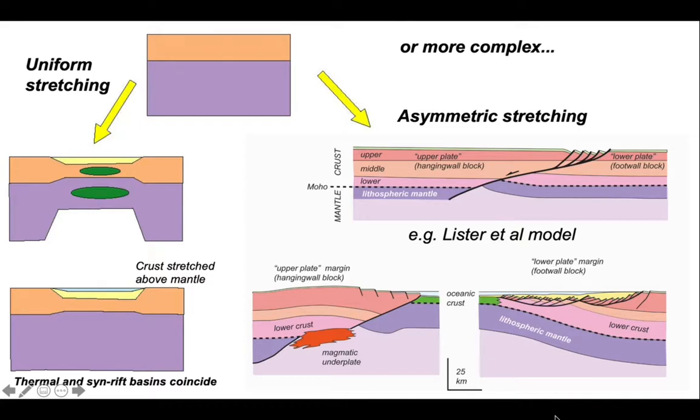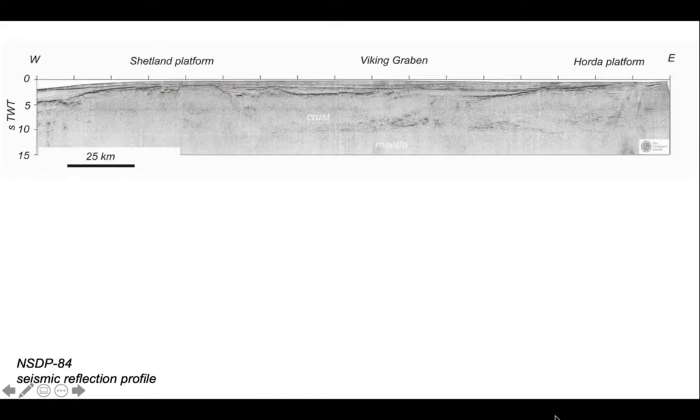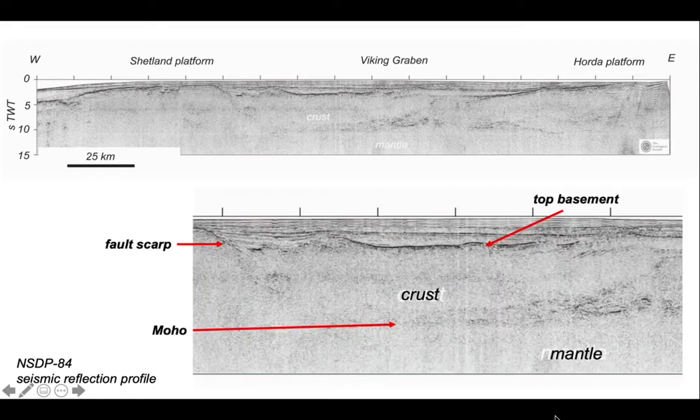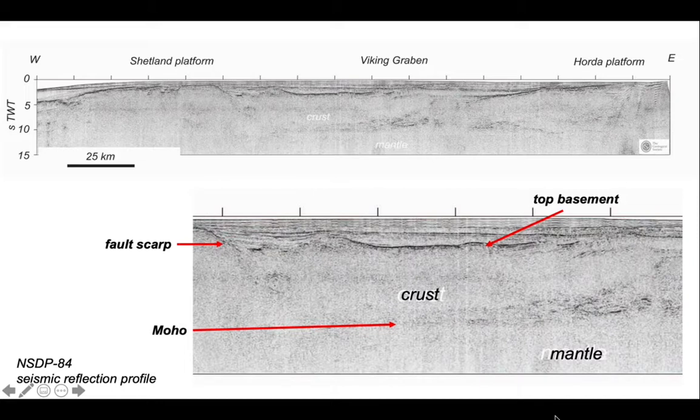So how relevant are these models to sedimentary basins? This was a fundamental question in the early part of the 1980s as seismic reflection profiles began to be developed that imaged the entire crust across basin systems. The North Sea was a key testing ground. Here's a deep seismic profile across the northern part of the North Sea basin. We can identify the Moho, the top of the crust, and maybe some fault structures within it.